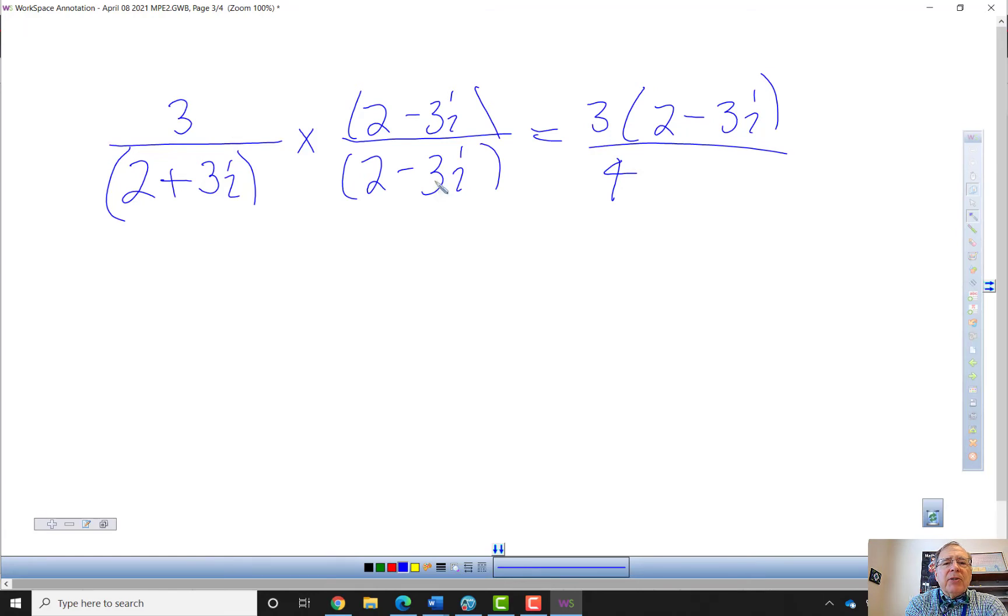And then three times three is nine, and that'd be negative nine. But i squared is a negative one. So this is plus nine.